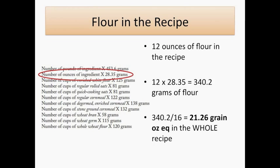Next, we move on to the flour in the recipe. The food buying guide tells us that for grains such as flour, we can multiply the total ounces of grain by 28.35 to get the number of grams, then divide the number of grams by 16, because the USDA says that every 16 grams of grain equals a 1 ounce grain equivalent. In this case, the 12 ounces of flour multiplied by 28.35 and then divided by 16 provides 21.26 grain ounce equivalents for the whole recipe.